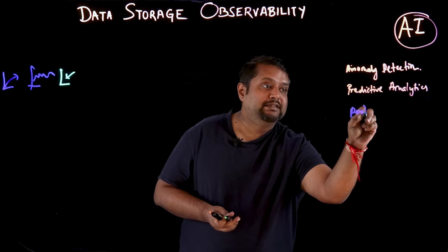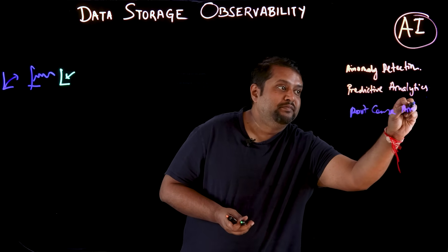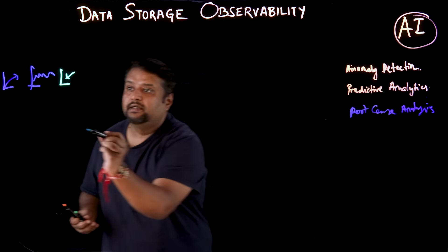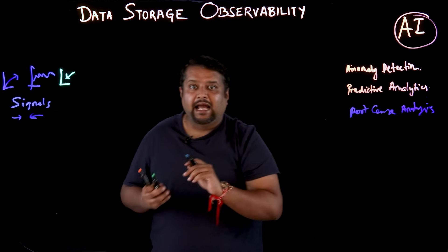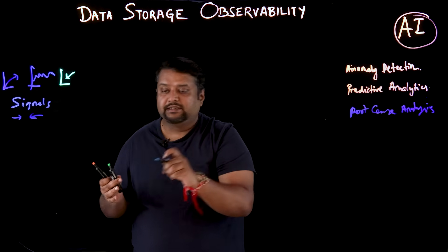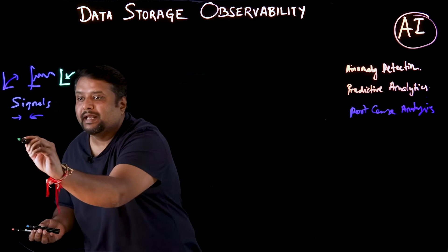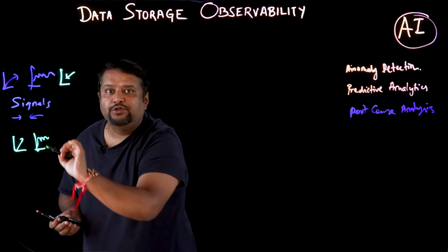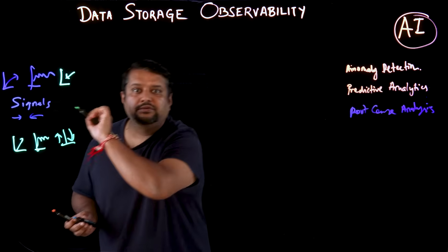The third AI use case is root cause analysis — a pain point for all storage admins. Instead of manually sifting through logs and metrics, storage admins can leverage artificial intelligence, which can correlate signals across infrastructure layers to quickly pinpoint the root cause behind performance or availability issues, making storage admins' lives a lot simpler.